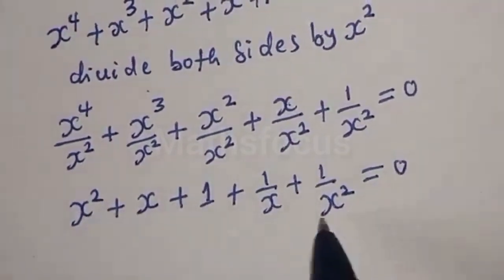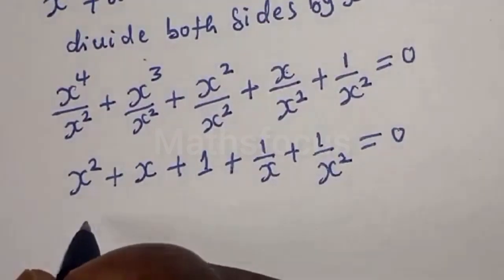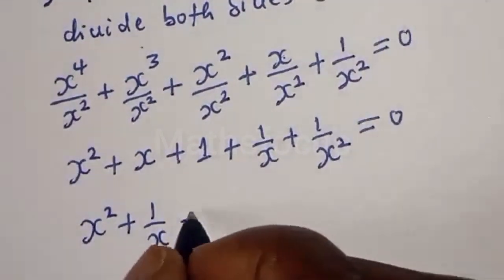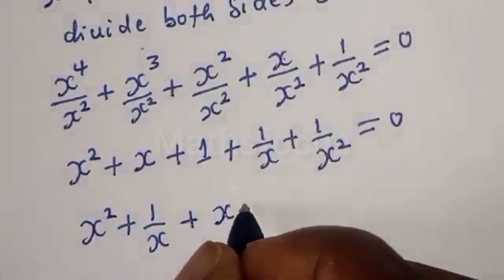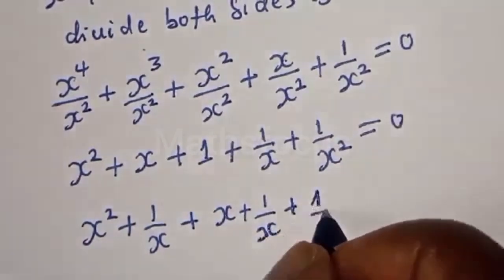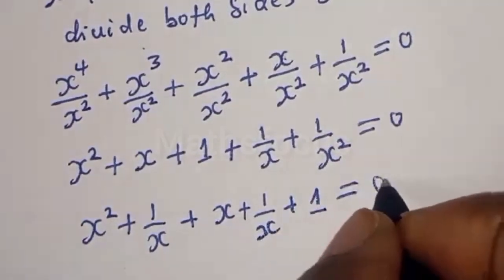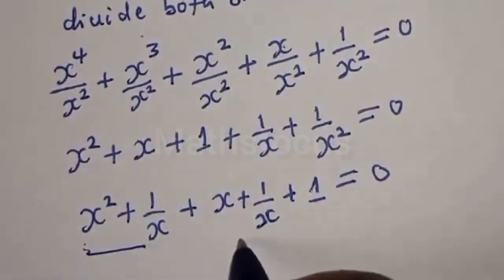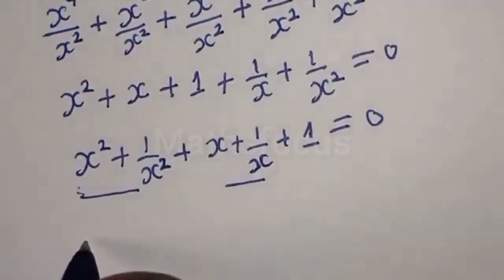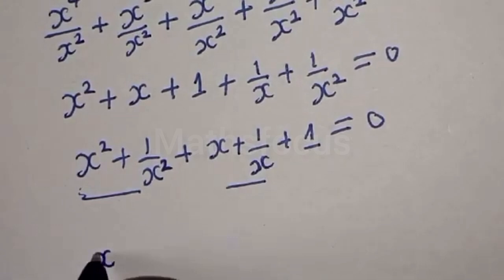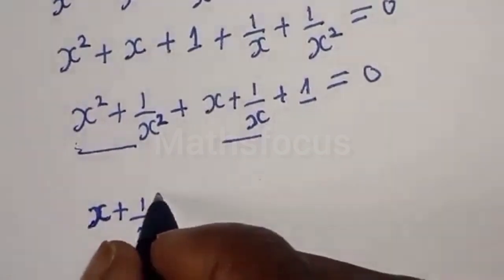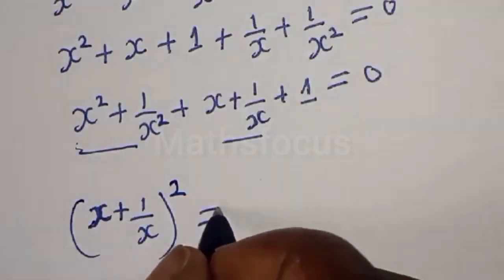Now here we can group: we have x squared and 1 over x squared together, and x and 1 over x together. So we have x squared plus 1 over x squared, plus x plus 1 over x, plus 1, is equal to 0. We need to find the value of x squared plus 1 over x squared.